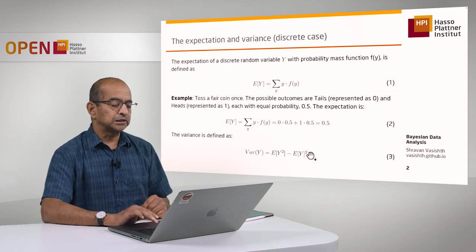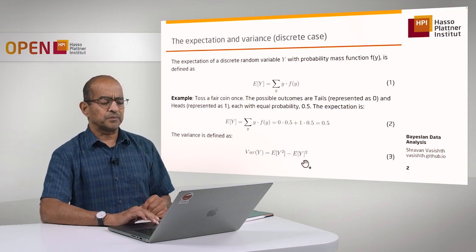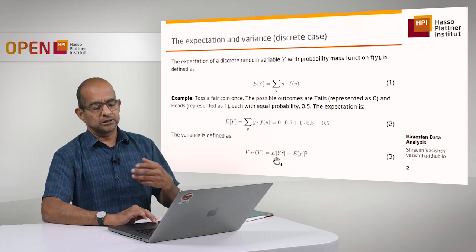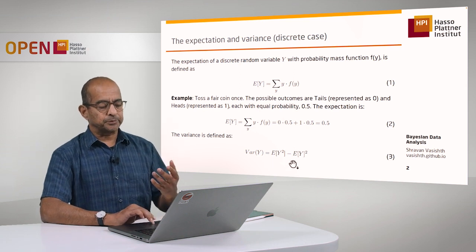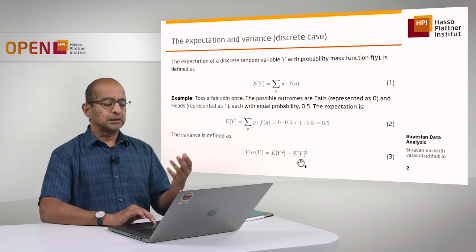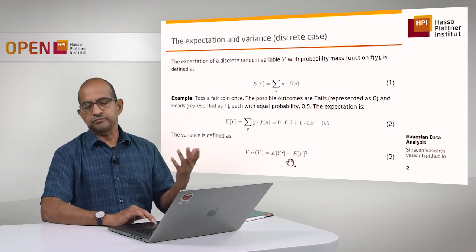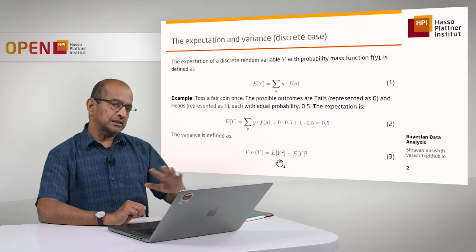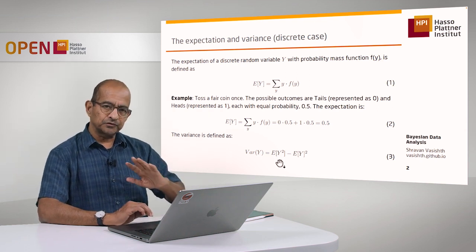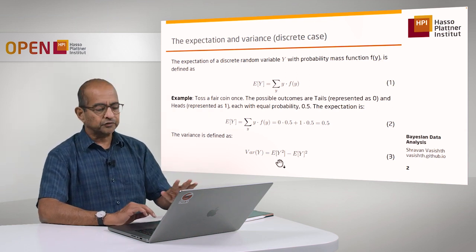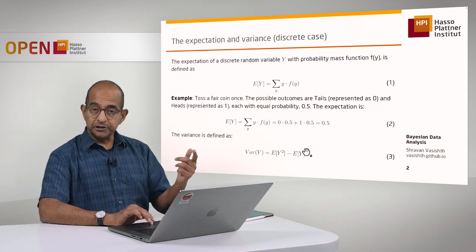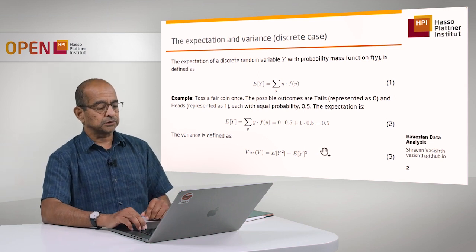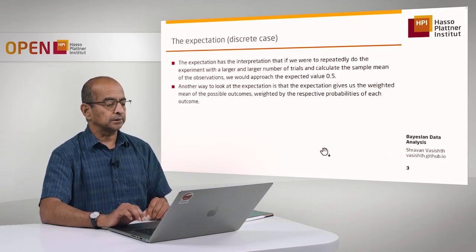The variance is computed with this formula. I won't say much about this, except that you're still computing expectations of some function of this random variable. This is a discussion that's not critical for us, but if you're interested I'll point you to some textbooks that you can look at.